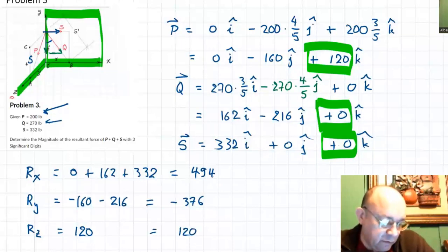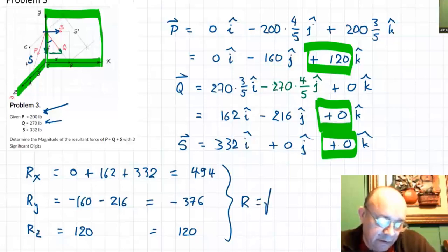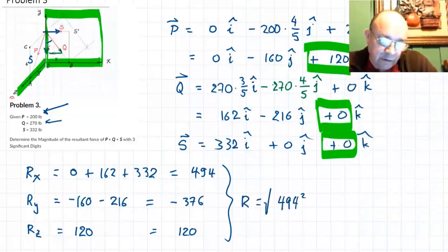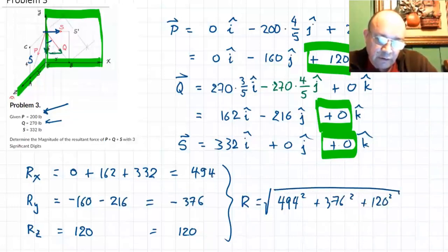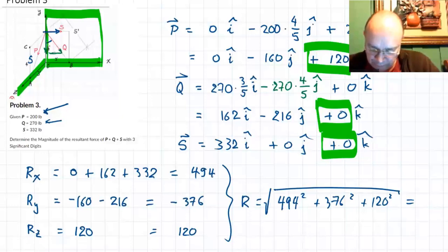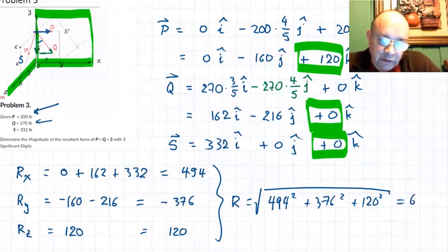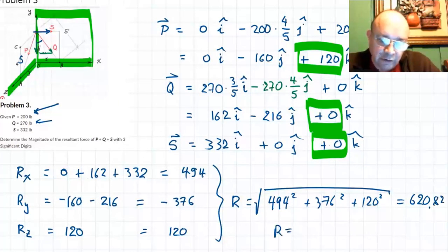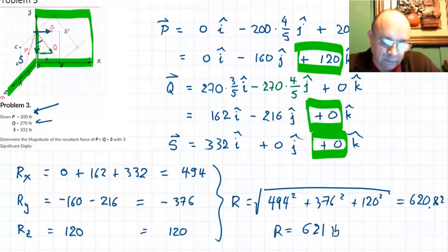Determine the magnitude with three significant digits using the Pythagorean theorem in 3D: square root of 376 squared plus 494 squared plus 120 squared equals square root of 620.82, which gives approximately 621. So the answer is 621 pounds.